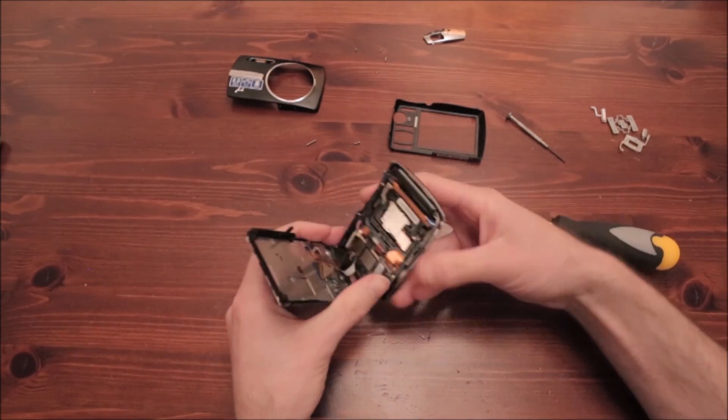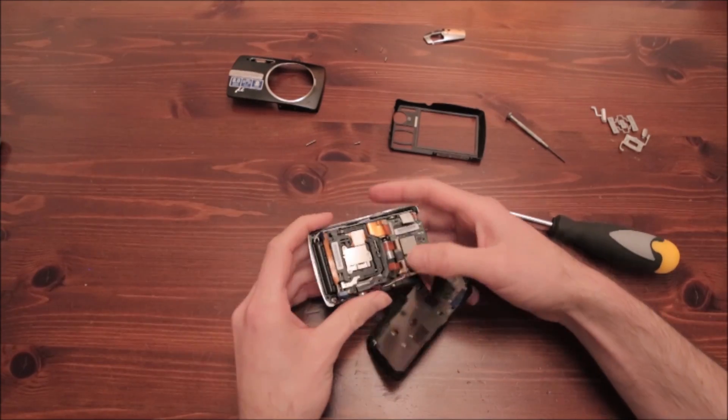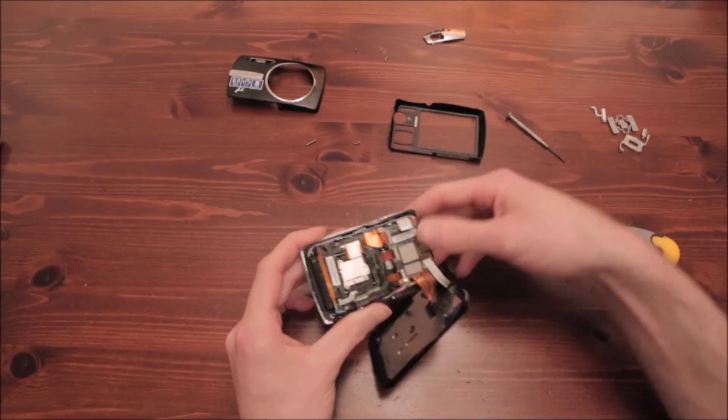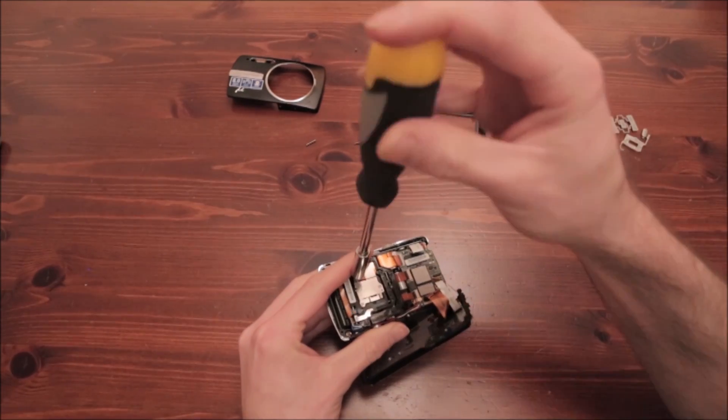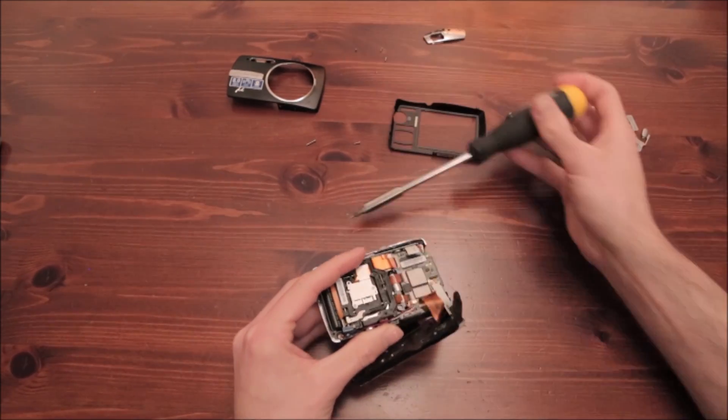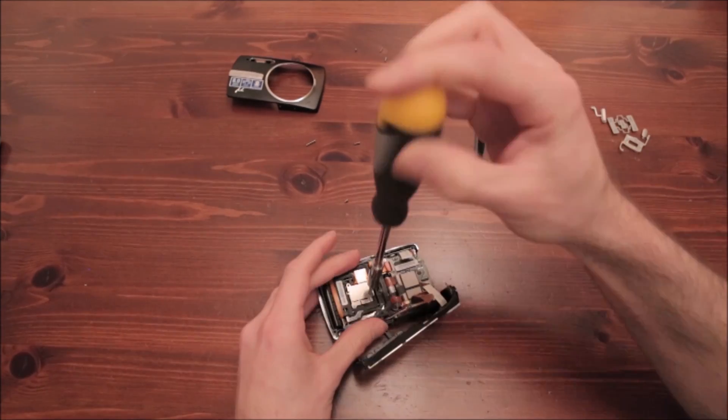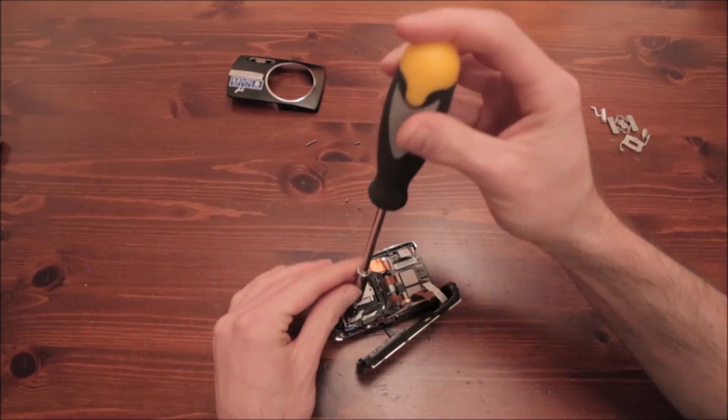The sensor is connected to the lens and it's usually connected with three or four screws. So we take them slowly. One, two, and three.